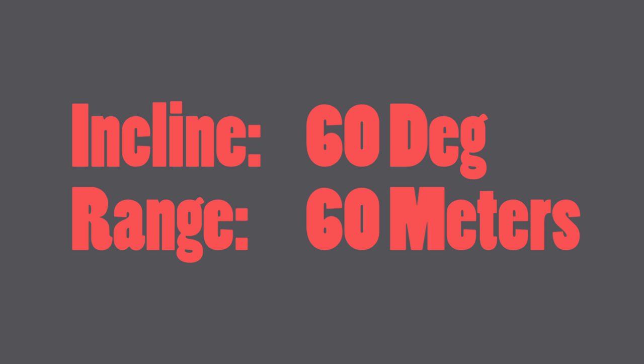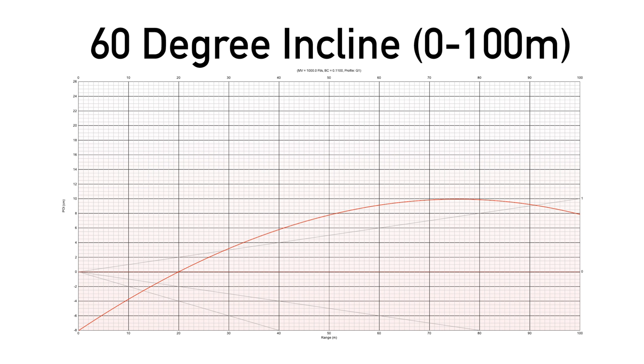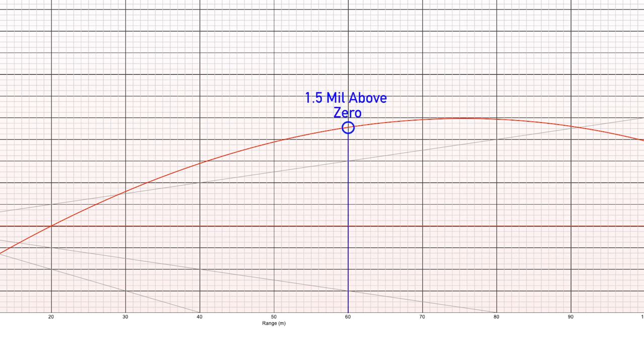Let's put these same numbers into a ballistics calculator and look at our new trajectory. That's a crazy graph — my point of impact is almost one mil above zero at 100 meters, which looks like it can't possibly be true. But look at 60 meters: that's pretty much 1.5 mils hold-under, exactly what we saw in real life. So the big question is: what is my ballistics calculator taking into account that the rifleman's rule isn't?